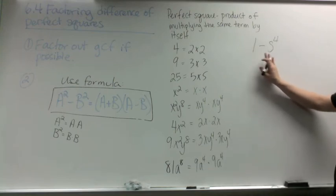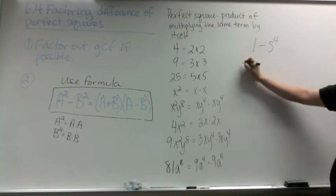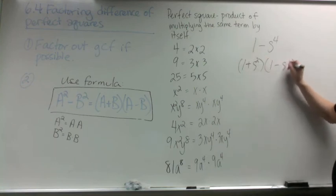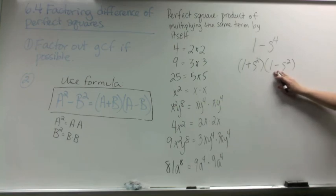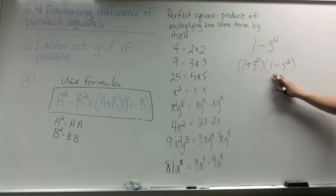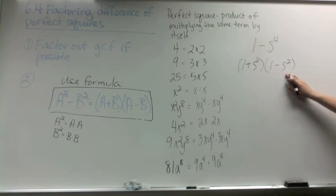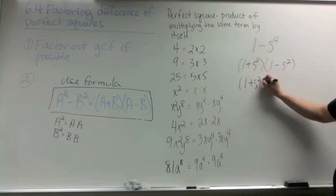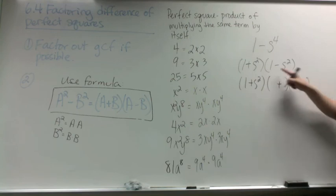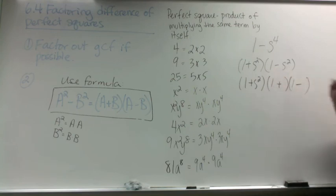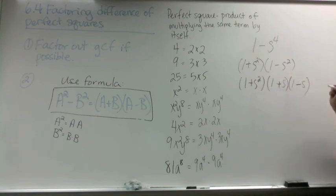In our next example, 1 minus s to the 4th, we have two perfect squares and a difference, so I set up my parentheses: 1 plus s squared, 1 minus s squared. However, we are still left with a difference of perfect squares after we apply the formula. So we have to factor again. The 1 plus s squared gets left alone, and we continue to factor 1 minus s squared: putting in the signs, 1 times 1 and s times s. Now we have factored 1 minus s to the 4th completely.